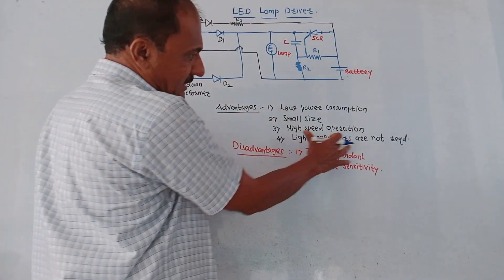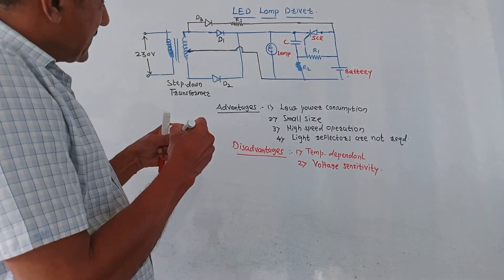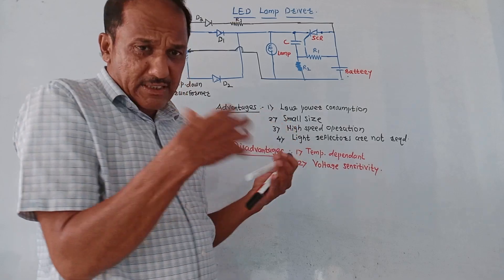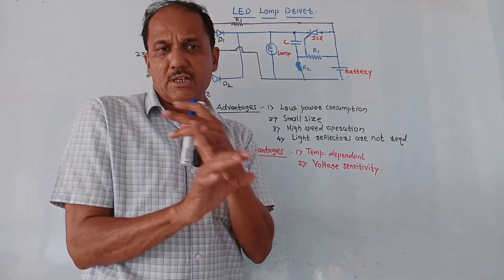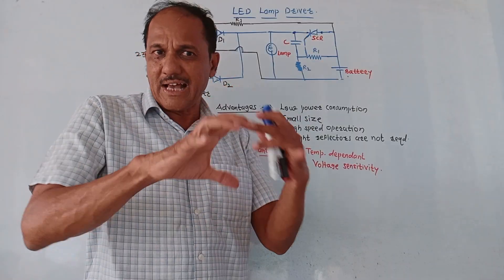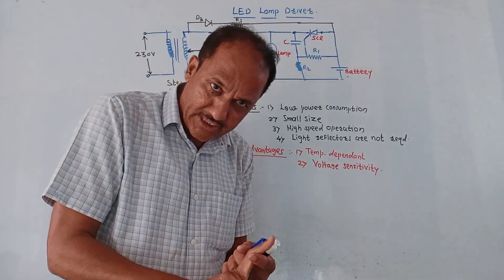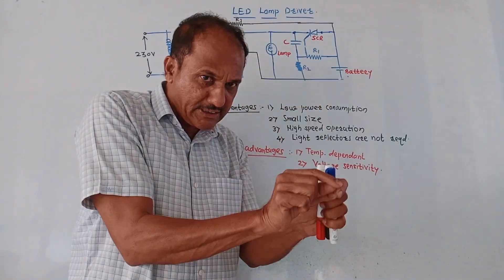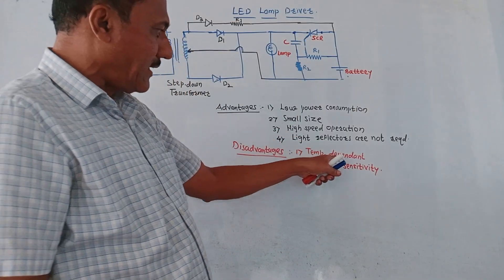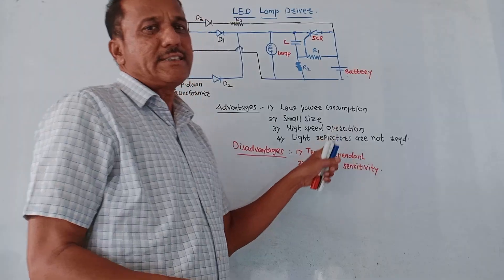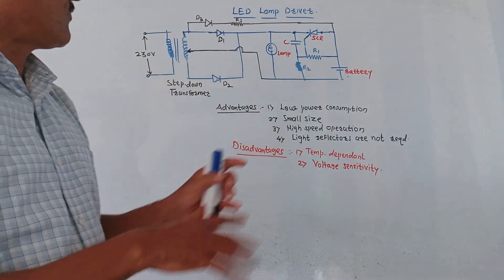The disadvantages: this circuit is a driver circuitry for LED lamp, and LEDs are temperature sensitive devices. That means as the operating temperature increases, the voltage across LED decreases, and once the voltage decreases it draws more current. So these are temperature dependent circuits and it is voltage sensitive. These are the advantages and disadvantages of LED lamp driver.